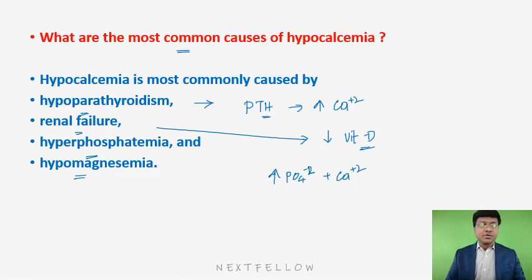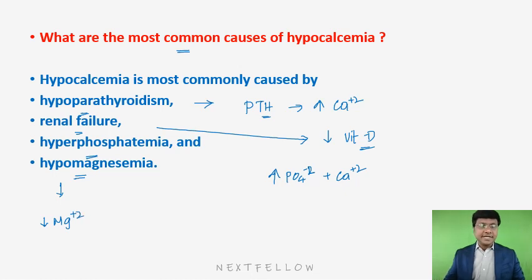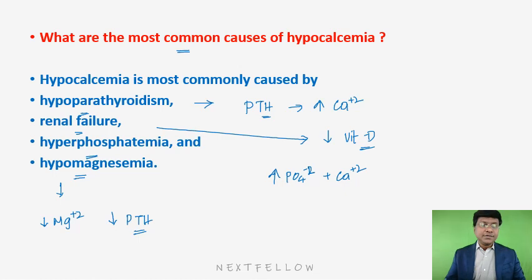Hypomagnesemia is another important cause of hypocalcemia. Whenever there is hypomagnesemia, parathormone levels will be reduced. Magnesium is required for secretion of parathormone from the parathyroid gland. If there is hypomagnesemia, that will cause hypoparathyroidism and subsequently hypocalcemia.